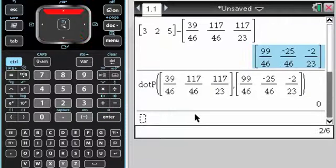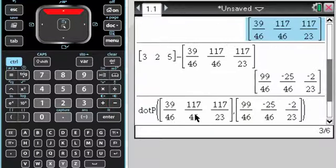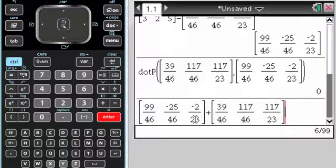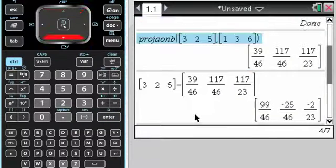And then obviously, if I add them together, if I do this plus this, so one of them is the projection. I've lost track of what's what. But anyway, I get [3, 2, 5], which is what I was expecting, because I'm doing the projection of [3, 2, 5] onto [1, 3, 6].